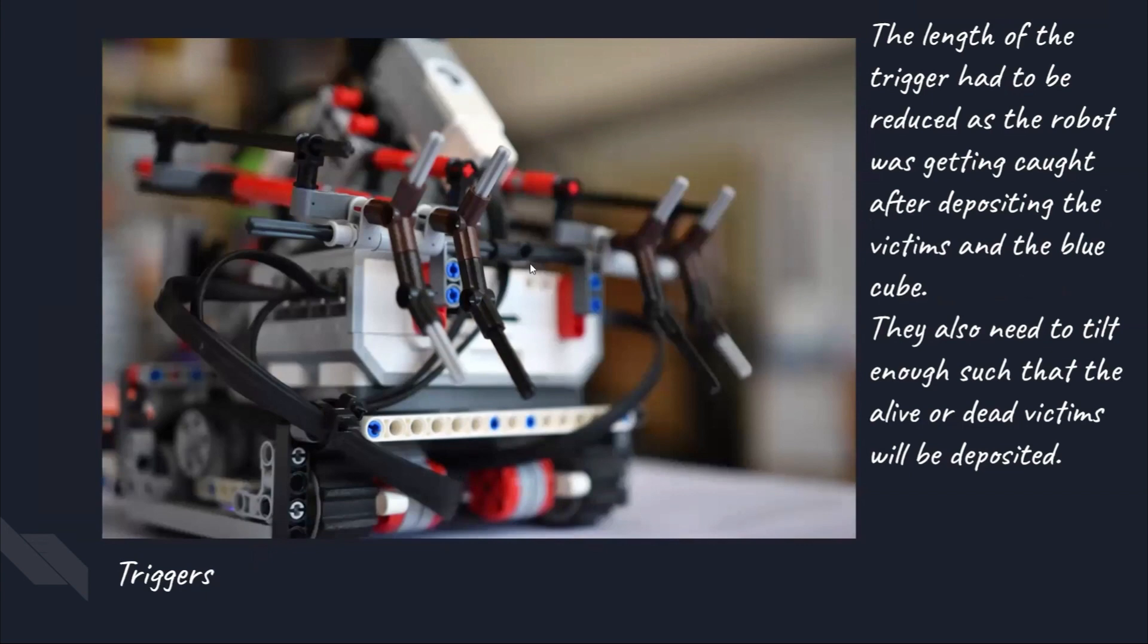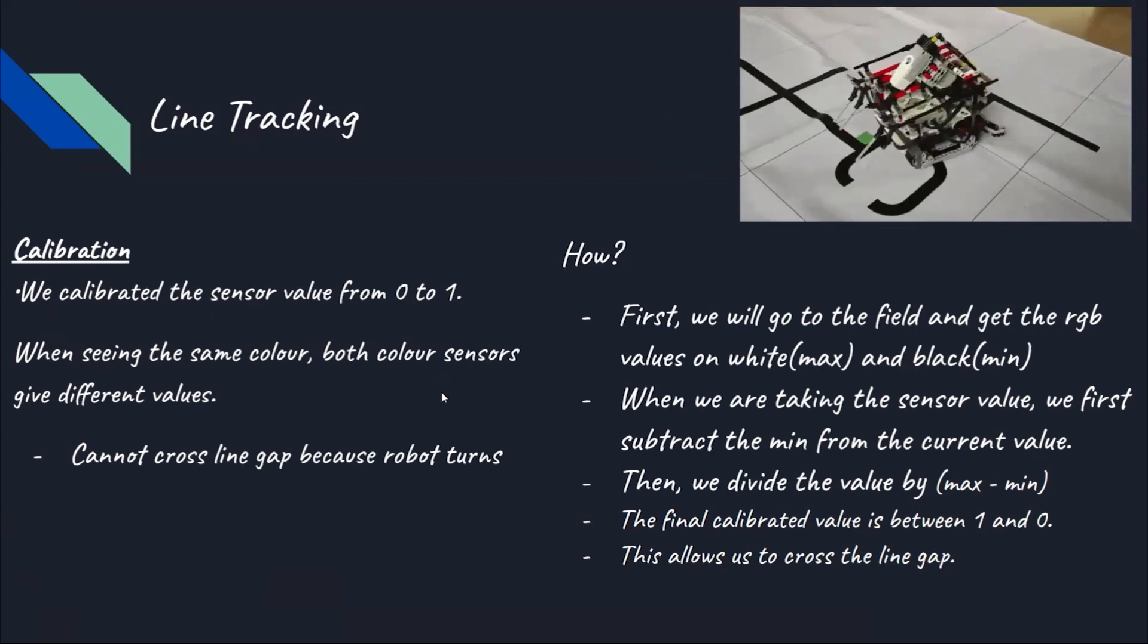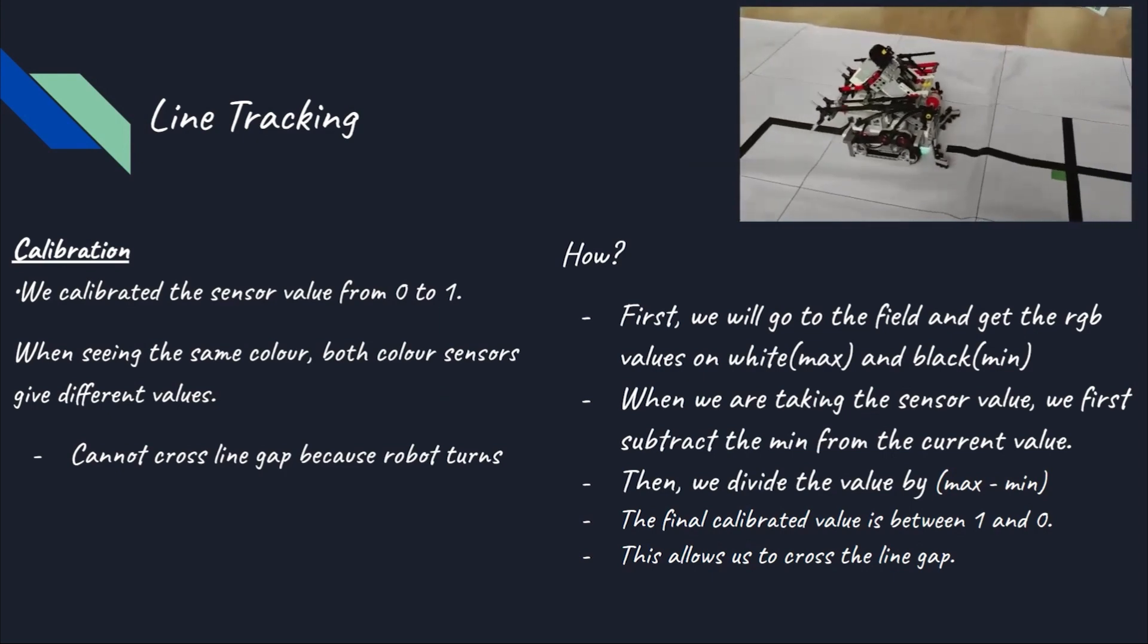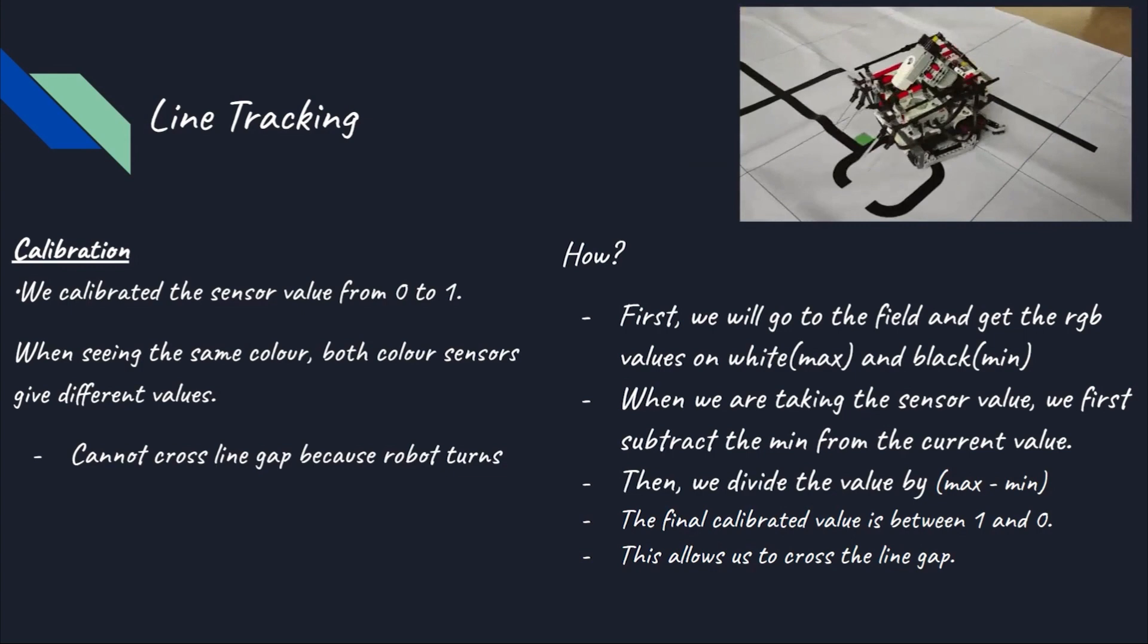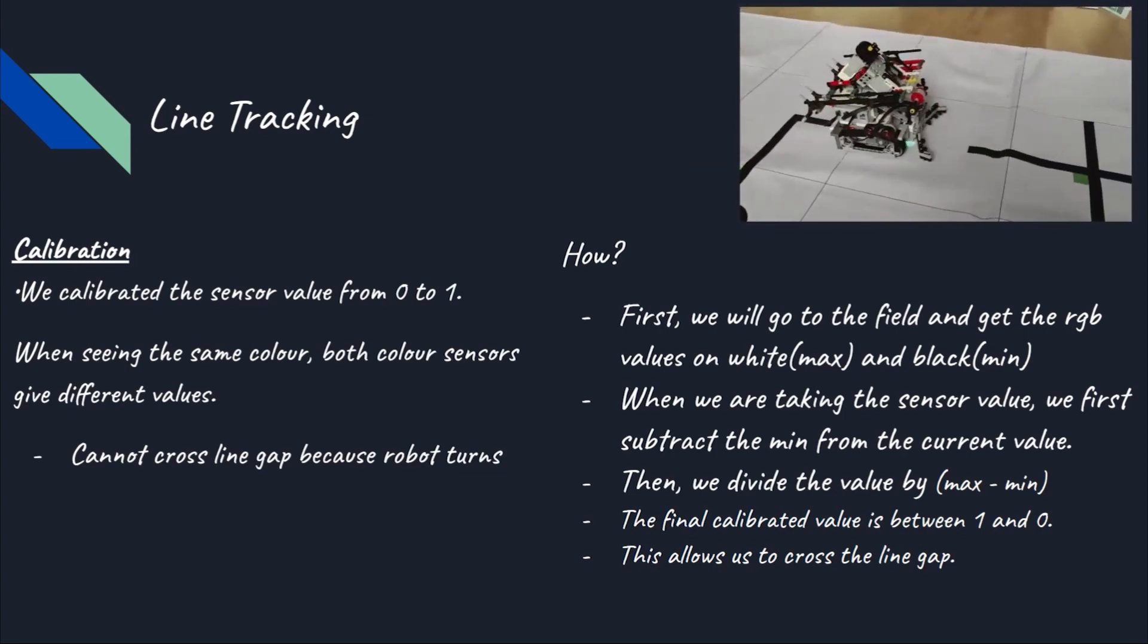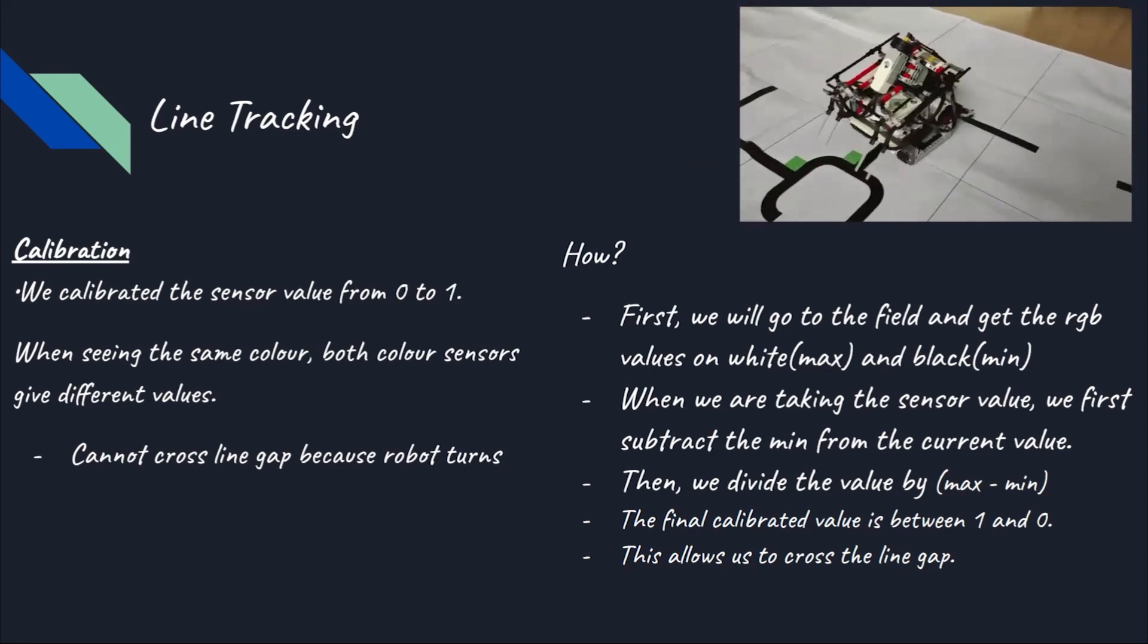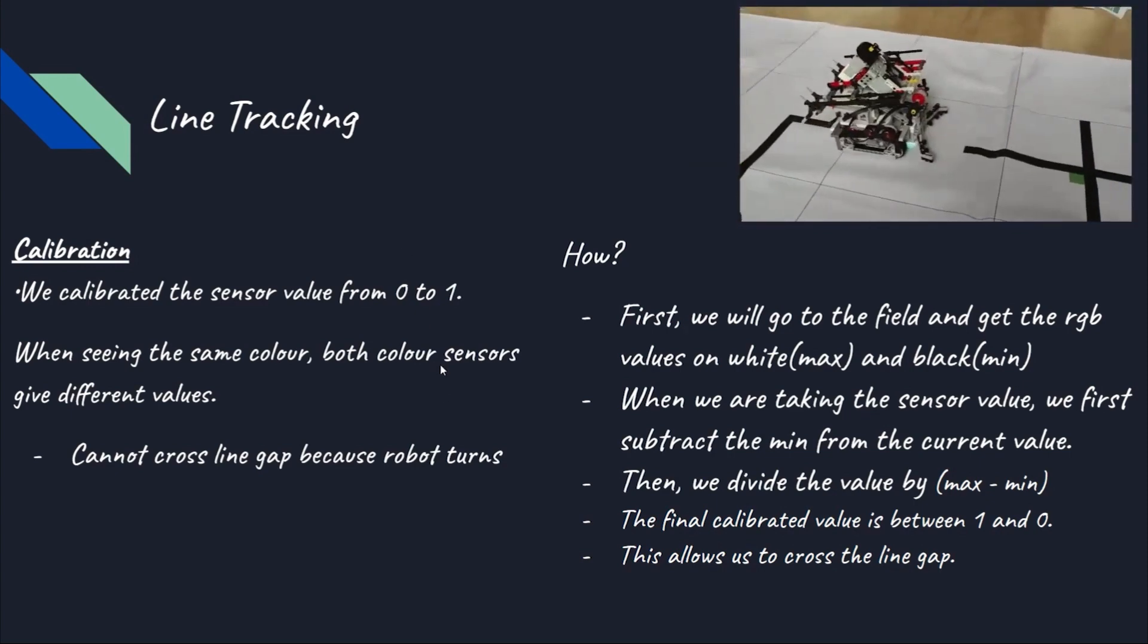We will now talk about programming. The main task for this challenge is line tracking, which I will talk about. What we did was to calibrate the sensor value from 0 to 1. When the color sensors see the same color, they will give different values. Before we did calibration, the robot went off the line at gaps because the robot was turning. How did we do this? First, we went to the line and got the red, green and blue values from white, which is the maximum value, and black, which is the minimum value.